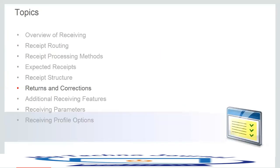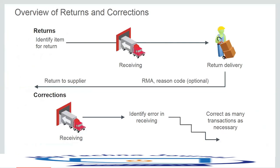For returns and corrections, this diagram depicts how the return and correction process works. We can return delivered items to receiving and return received or delivered externally-sourced items to the supplier, provided the purchase order has not been cancelled or finally closed. We can also return unordered receipts that have not been matched to the supplier. From a corrections standpoint, Oracle Fusion Receiving provides the capability to correct any receiving transaction against the purchase order, except another correction or a return-to-receiving transaction.